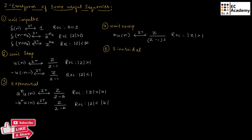Next we will see the sinusoidal signal. We can represent the sinusoidal signal as sin(ωn) U of n. If we perform Z-transform we will get Z times sin omega divided by Z squared minus 2Z cos omega plus 1. Here ROC will be magnitude of Z greater than 1.